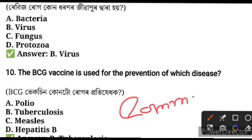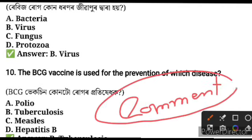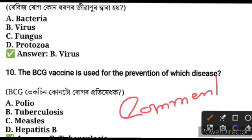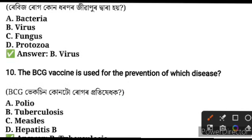If you have any questions about BCG vaccine — BCG vaccine is used for prevention of tuberculosis. BCG vaccine is used for prevention of tuberculosis.